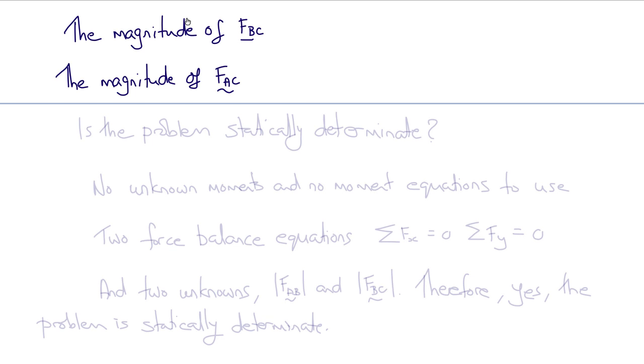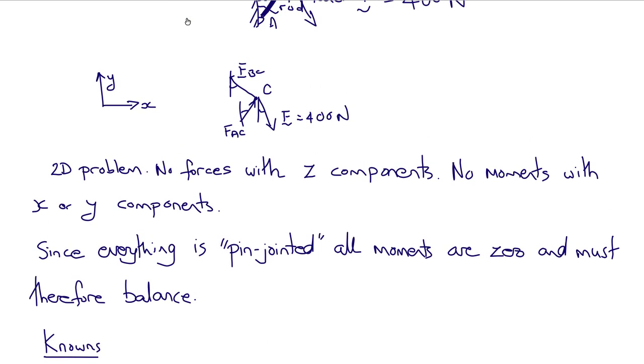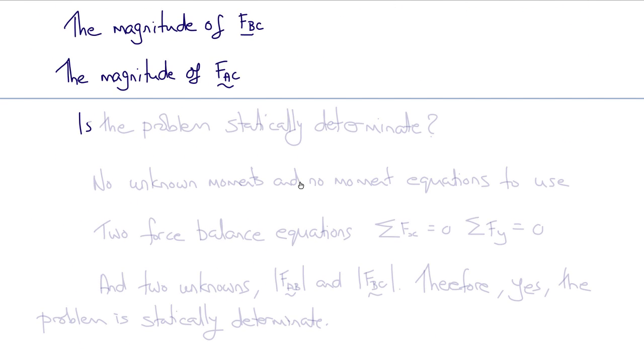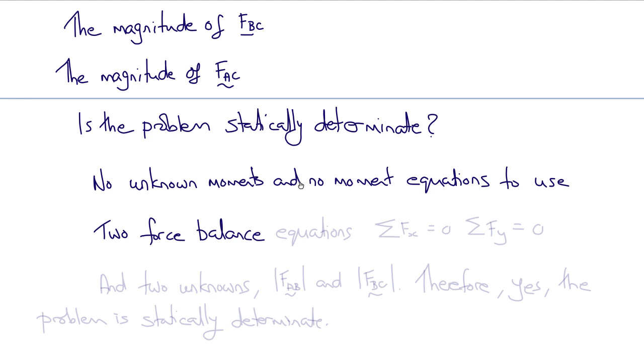So is this problem statically determinate? Well, there are no unknown moments and no moment equations to use in this problem, because it's a pin-jointed structure, so none of the intersections can support a net moment. So that means we're left with two force balance equations, one saying the sum of the x forces is zero, and the other saying the sum of the y component of the forces is zero. And we have two unknowns, the magnitude of the force FAC and the magnitude of the force FBC. And so therefore, yes, it appears that the problem is statically determinate. But there is one caveat here that we should consider.